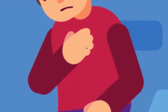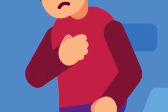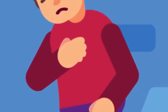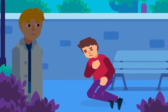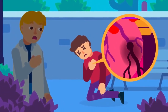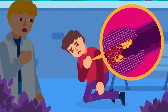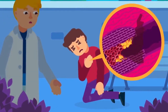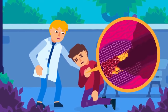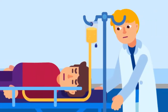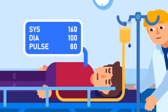CHD commonly induces angina pectoris, or chest pain, and shortness of breath. This could be due to the malfunction of the cardiac muscles. Its parts could die owing to the lack of oxygen, supposedly delivered by the clotted blood. CHD can also be caused by hypertension, which happens when blood flows through the blood vessels at a consistently high pressure.